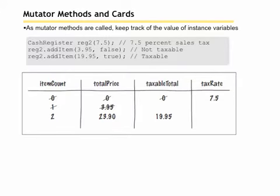Mutator methods. When you access a mutator method, you want to keep track of the values in the instance variables. Again, this can happen on the back of those index cards.